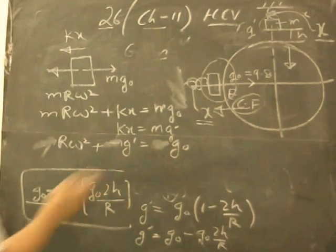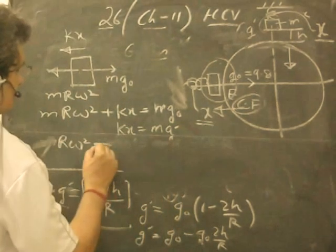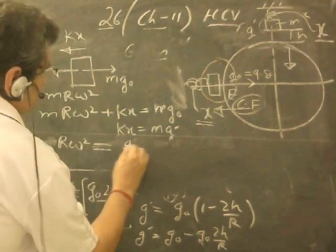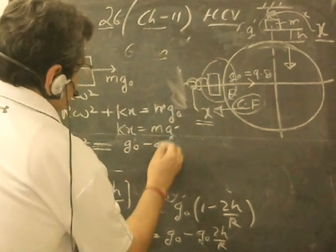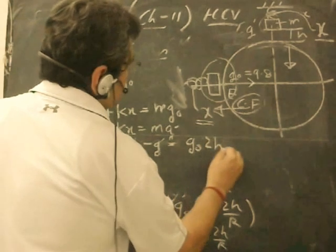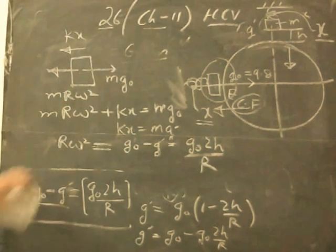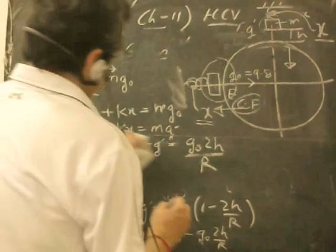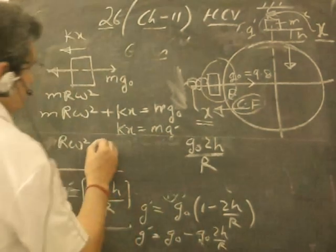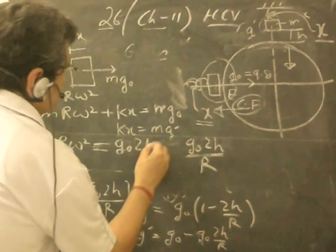Which we have found, this is g₀ - g'. It becomes Rω² = g₀ - g' which is equal to g₀(2h/R). So you can solve this equation now. Straight away it becomes Rω² = g₀(2h/R).